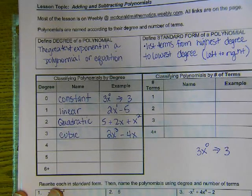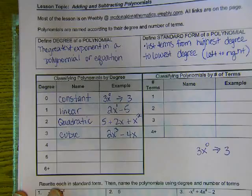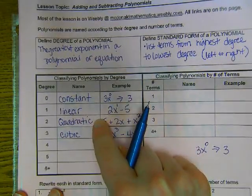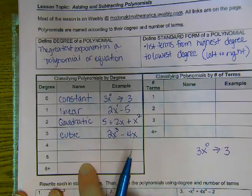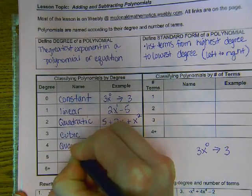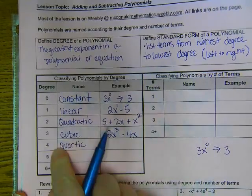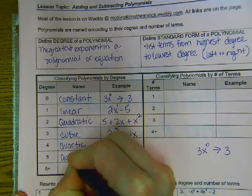Now, after cubic, if you don't remember them, I'm not concerned. I think we should be able to say constant, linear. Those are terms we've used. Quadratic, cubic, something new. But if you want to know them, there is one for four and five. And they are called quartic, which makes sense. Quartic with four.